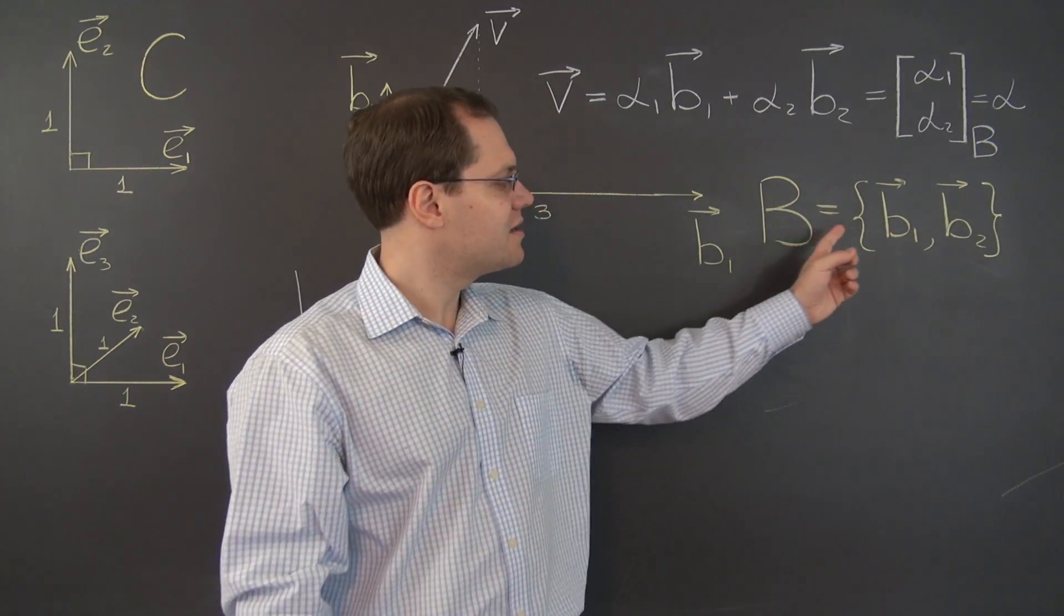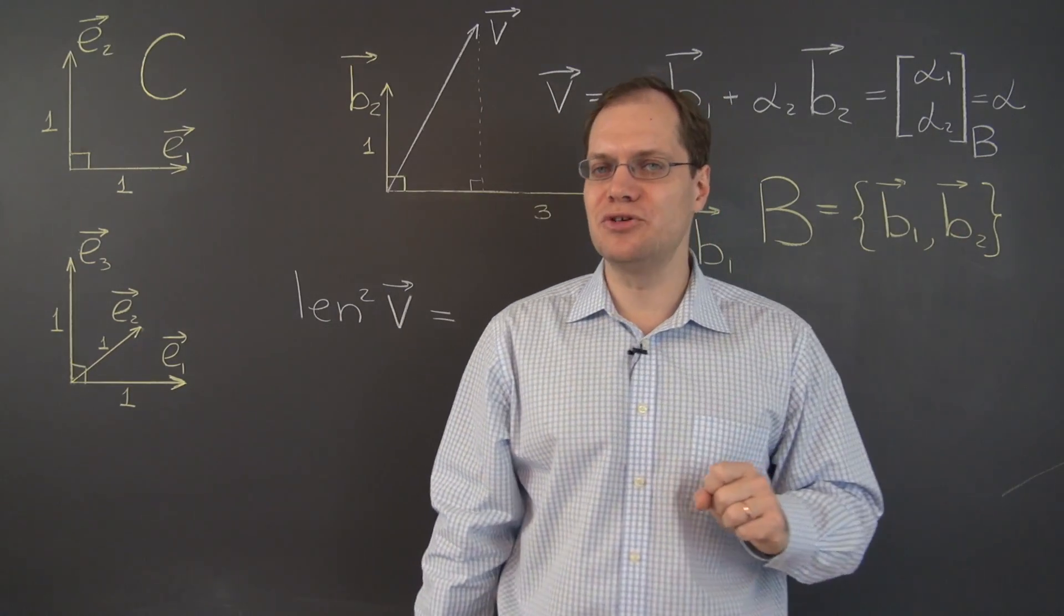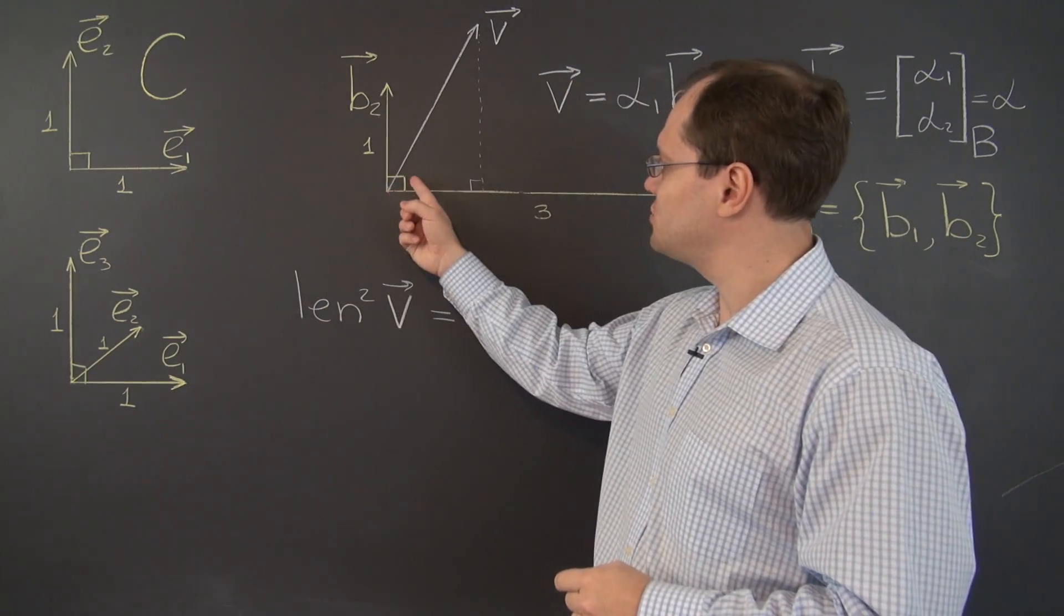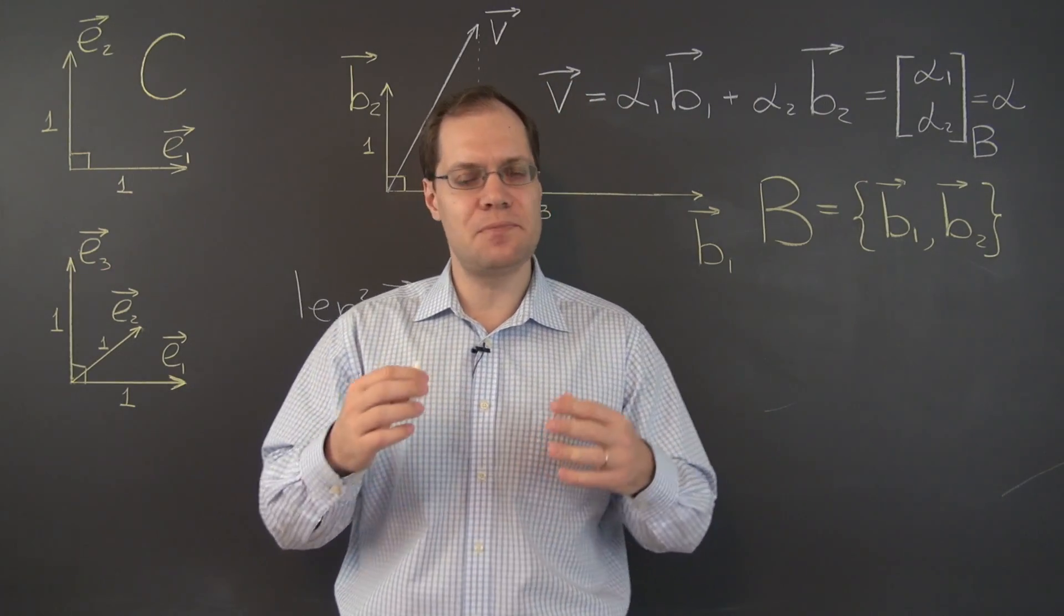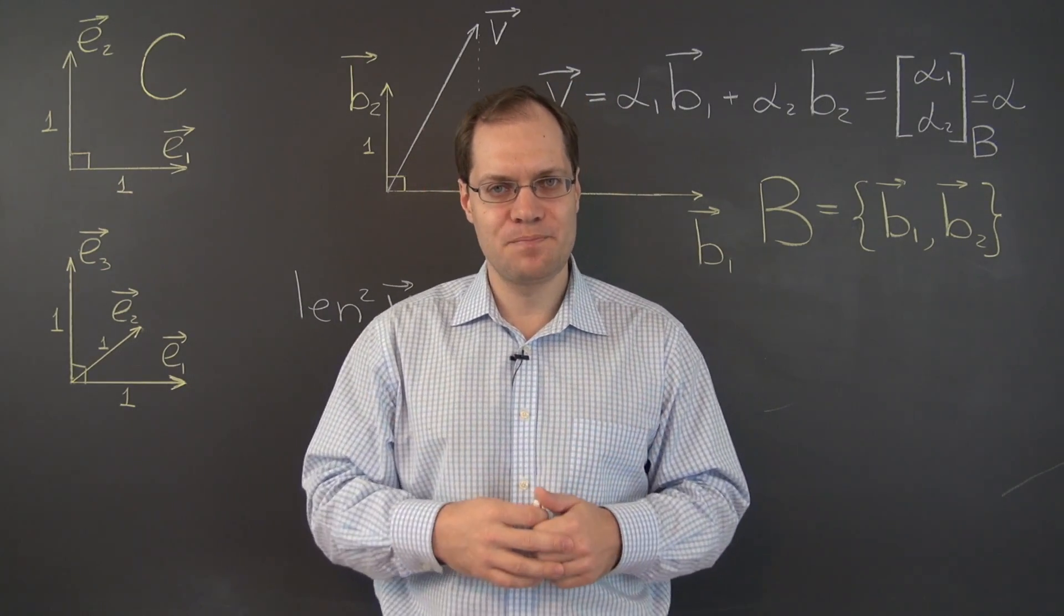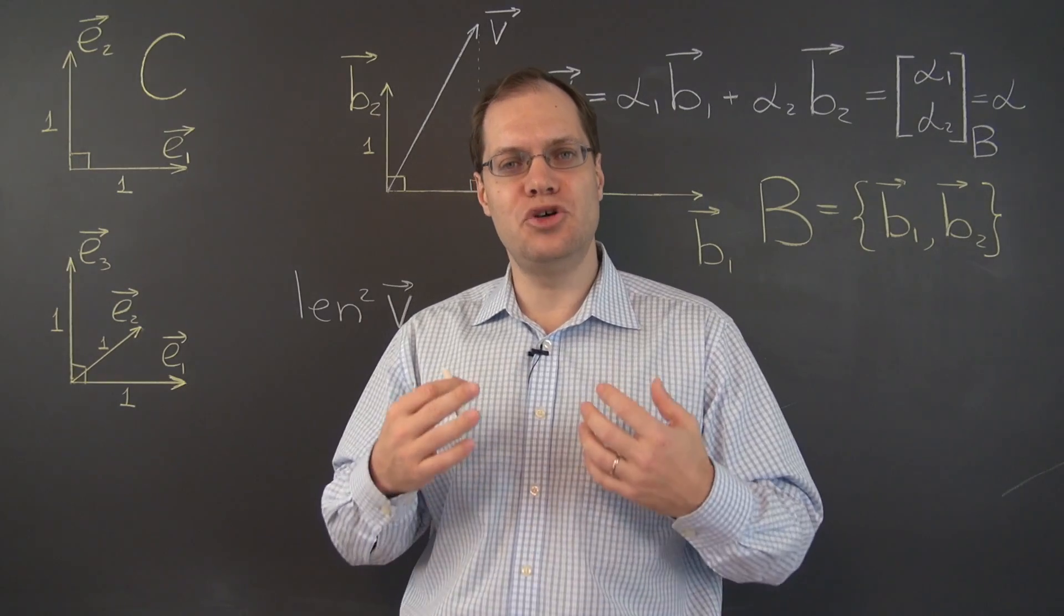Our new basis B consists of vectors b1 and b2, which are still orthogonal to each other. That's good because that will allow us to use the Pythagorean theorem like we did before, but they are no longer each unit length.